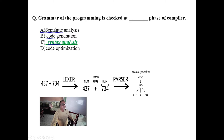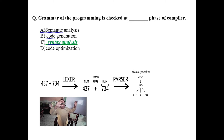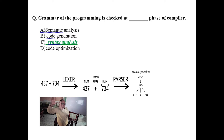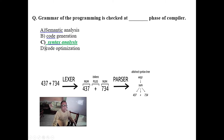The grammar of the program is checked at syntax analysis — it is not lexical analysis, it is syntax. The syntax analyzer takes arrays of tokens and tries to produce a parse tree or abstract syntax tree. The parse tree should be unique if the programming language grammar is unambiguous. That is the role of syntax analysis, and this is the output of syntax analysis.